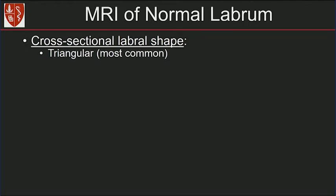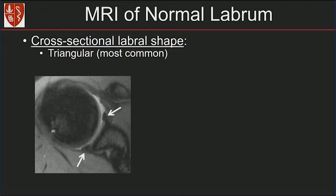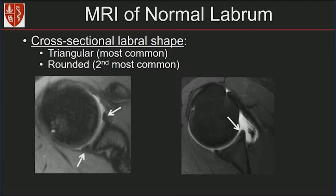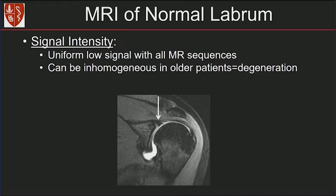So let's go through what a normal labrum should look like. On cross-sectional imaging, the most common shape is a triangle. Here we have an axial PD fat-suppressed image showing a normal triangular appearance of the anterior and posterior labrum. Remember, the normal labrum can also look rounded. Here we have an axial MR arthrogram image showing a rounded morphology of the anterior labrum. The signal intensity of the labrum should be uniform, low signal with all MR sequences. In older patients, you could have inhomogeneous signal due to degeneration.